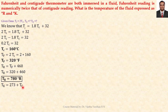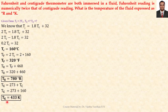The relationship between the Kelvin scale and the centigrade scale is given by: K = 273 + Tc. With Tc equal to 160 degrees, adding 160 plus 273 gives the Kelvin scale temperature as 433 Kelvin.